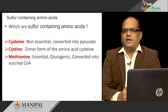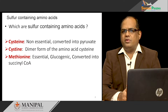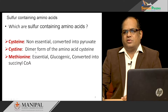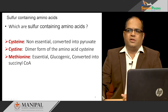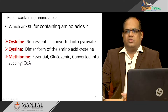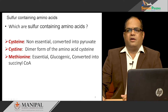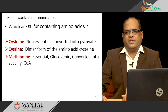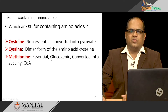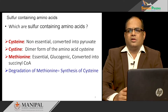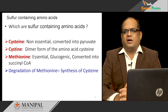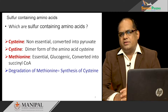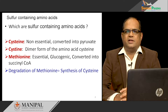Methionine is an essential amino acid, meaning you need to take this amino acid in your diet. Our body cannot synthesize methionine, and this methionine is glucogenic in nature — the carbon skeleton of methionine can be used to synthesize glucose. It can be converted into succinyl-CoA, which enters the TCA cycle, and from there you can synthesize glucose. Degradation of methionine is equal to synthesis of cysteine; you can synthesize cysteine during the metabolism of methionine. If methionine is not available, then cysteine becomes an essential amino acid.